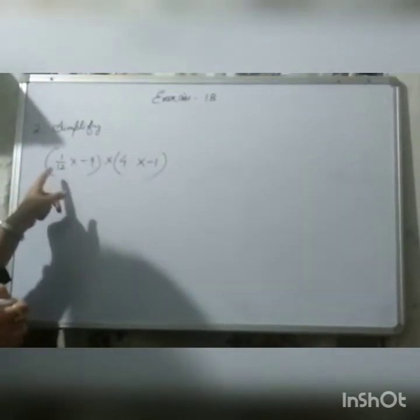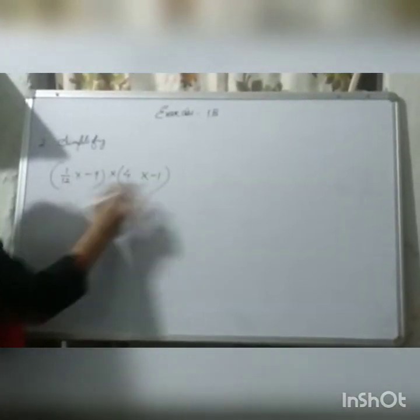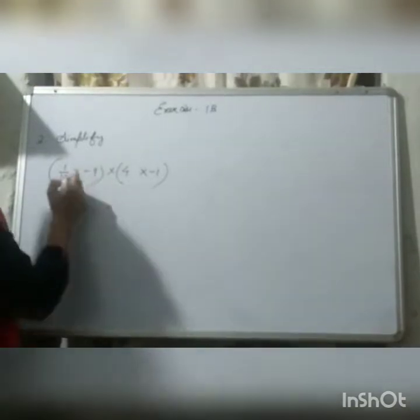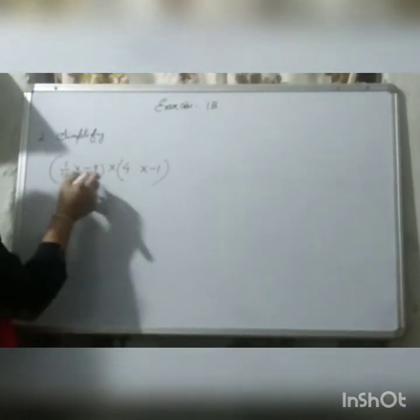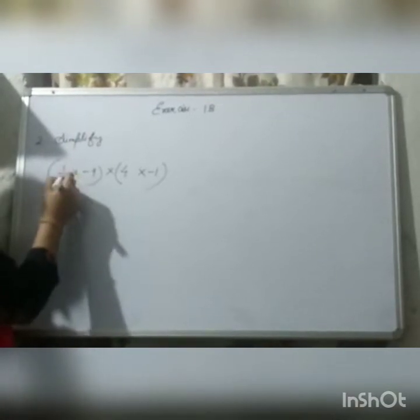First, we will divide this into groups. We will use brackets to make two groups. Now, we will solve these two in one bracket and these two in another bracket. Now, we will cut this. 12 and 9 will cancel - 9 and 12 with each other. So, 12 and 9 will be divisible by 3.